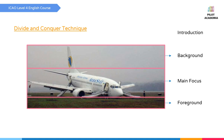Then you continue with the foreground — grass, sand, sea, river, or whatever the location is, maybe a runway or taxiway. Then we conclude with the results — why do you think it happened, causes, results, procedures, and any similar experience you may add. This is the divide and conquer technique: introduction, main focus, background, foreground, and results.